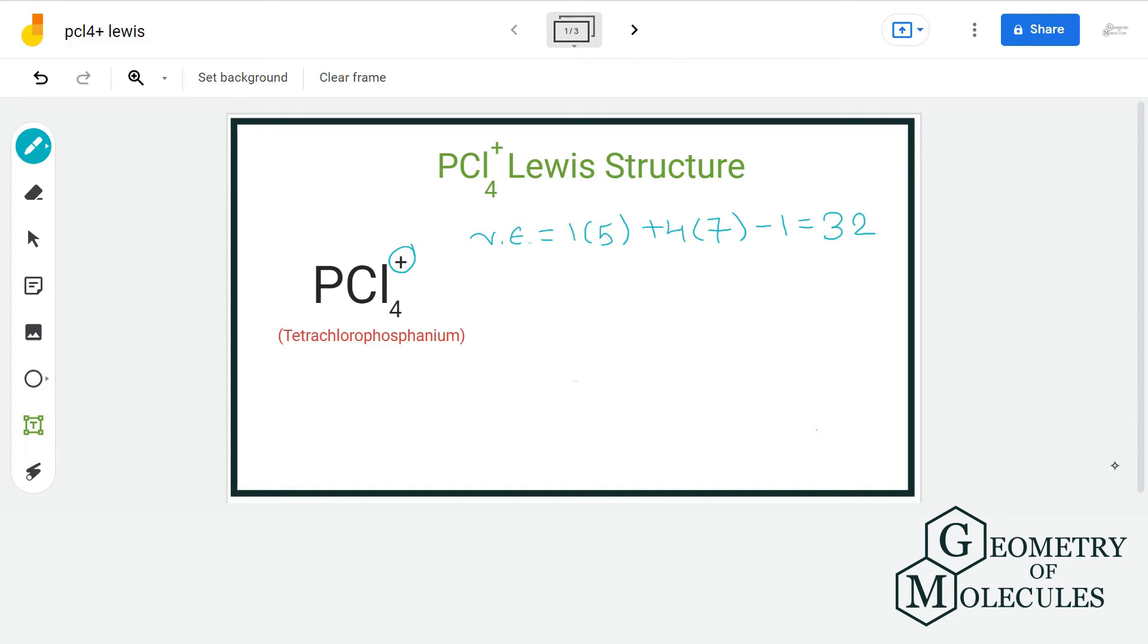For the arrangement of atoms, we will place phosphorus in the center and arrange chlorine atoms around it like this.